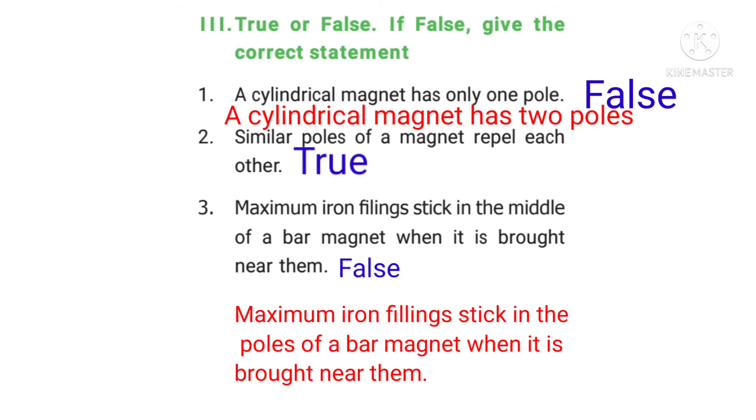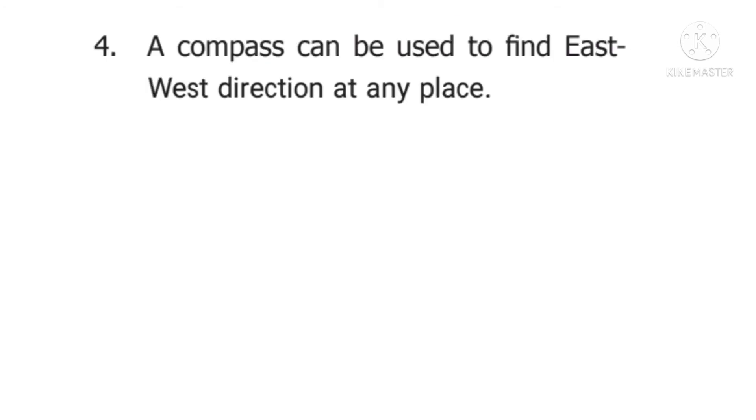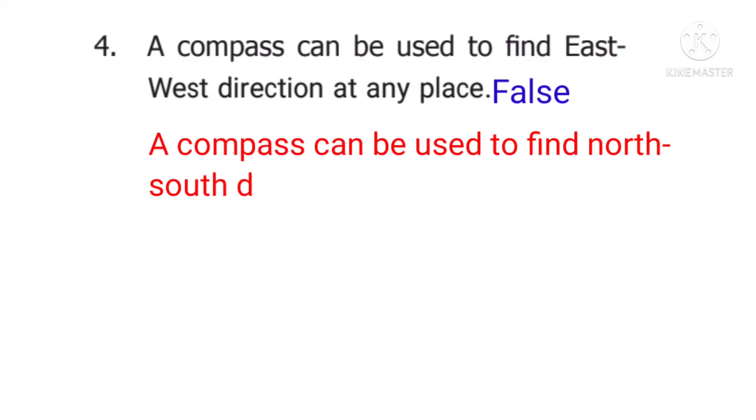4th question: A compass can be used to find east-west direction at any place. Answer: False. The corrected statement is, a compass can be used to find north-south direction at any place.